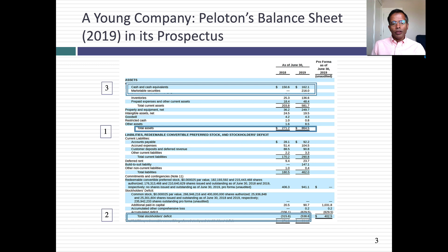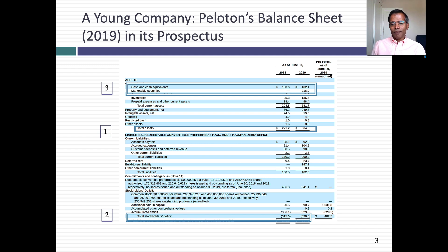Let's start with Peloton — a young company, early in its life cycle. This is from its prospectus at the time of its public offering. Peloton is a company that sells very expensive fitness equipment and a subscription to go with that equipment. Looking at items in the balance sheet that reflect its youth: first, the total asset base is tiny, though growing very fast — it went from $271 million to $865 million. Shareholder's equity is negative because the company's been losing money. Its biggest single asset is cash and marketable securities. The bulk of its value really comes from future growth, but future growth is not reflected on this balance sheet. That's a very young company.